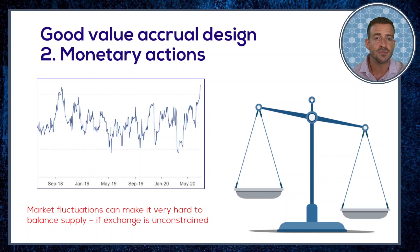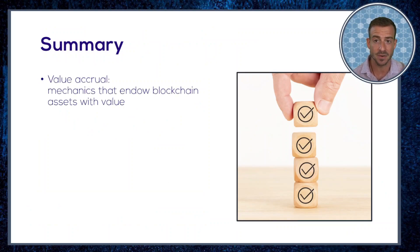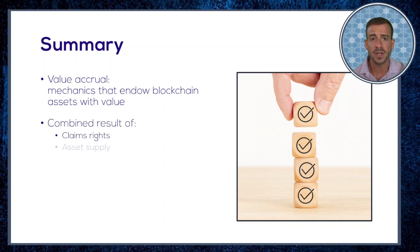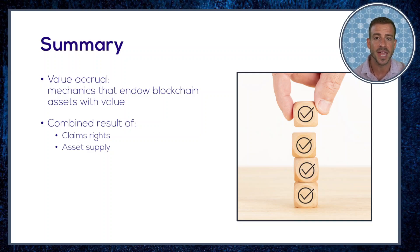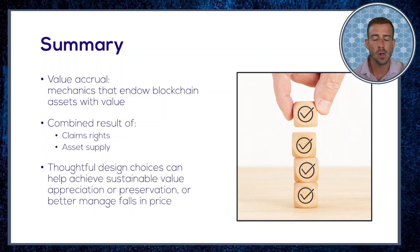And that is it. Final recap: value accrual mechanics endow blockchain assets with value. Value properties are the combined result of claims rights conferred by our digital tokens and the quantity of them in circulating supply. Understanding the origin of token value in foundational detail will allow us to make design choices that help us better manage the value of our assets in a sustainable fashion.